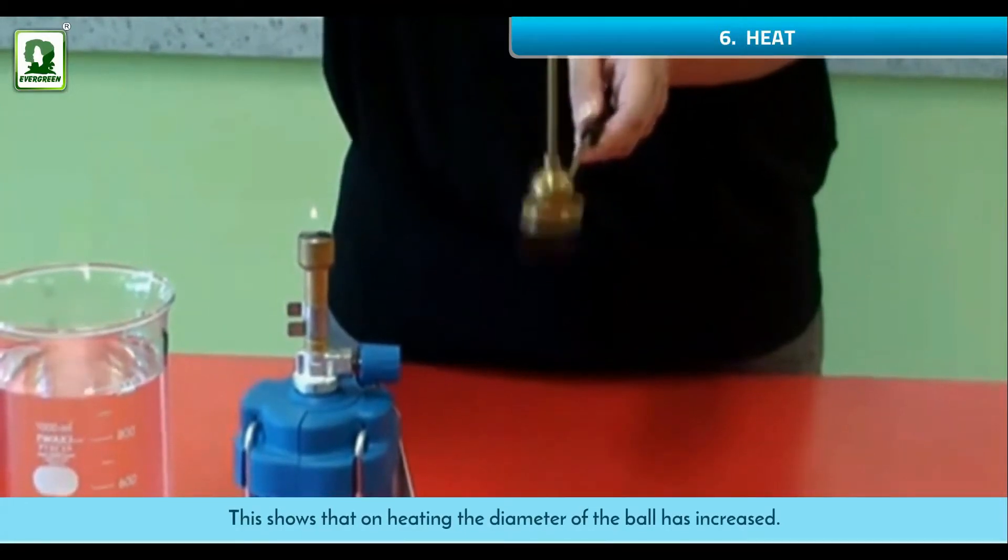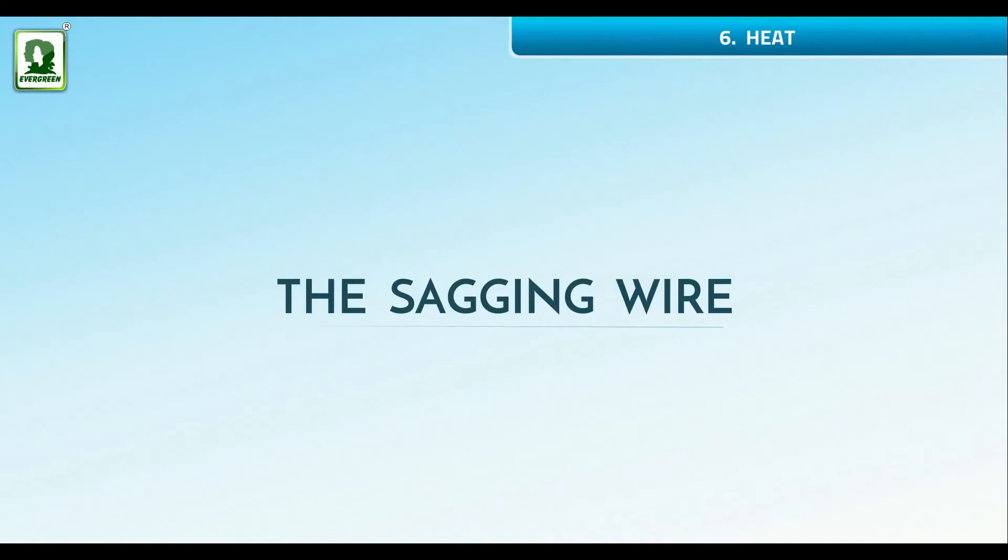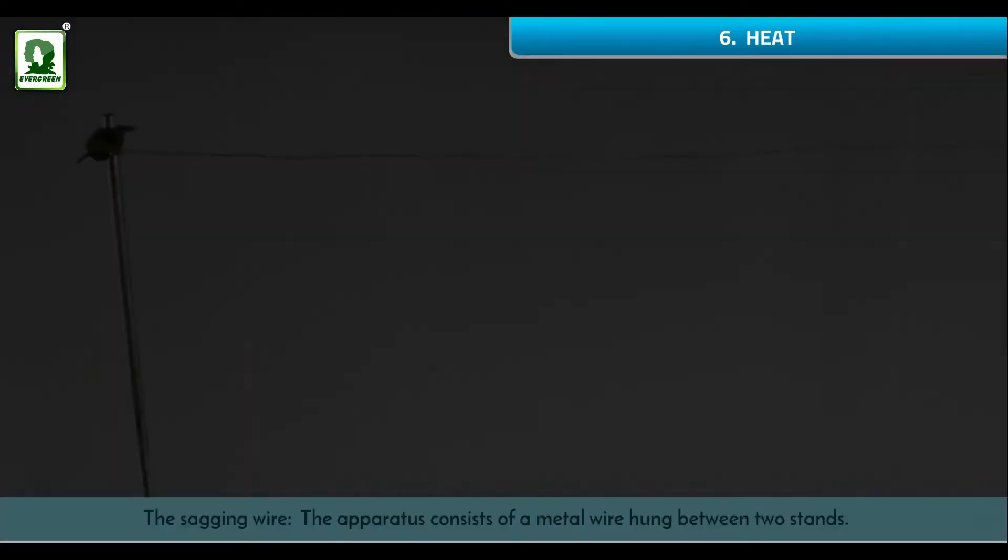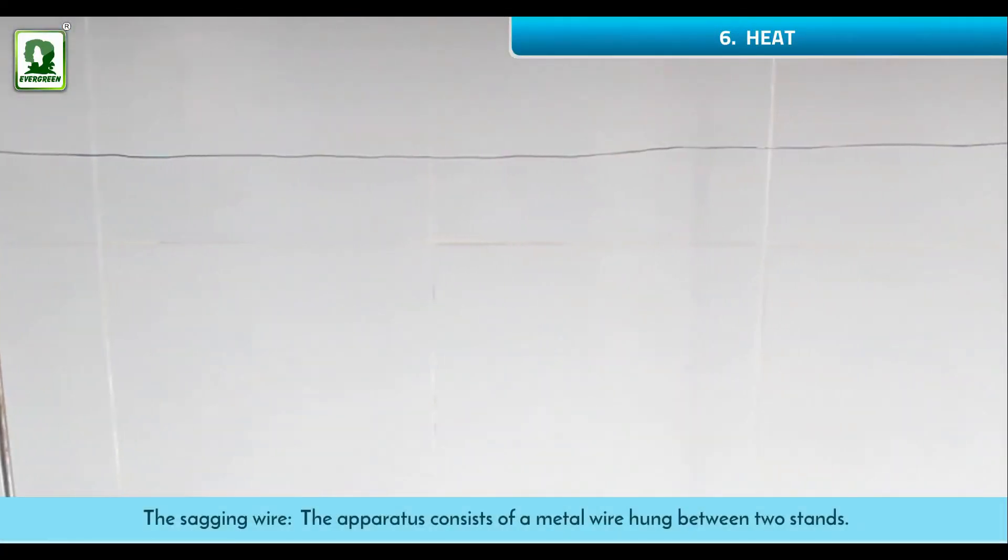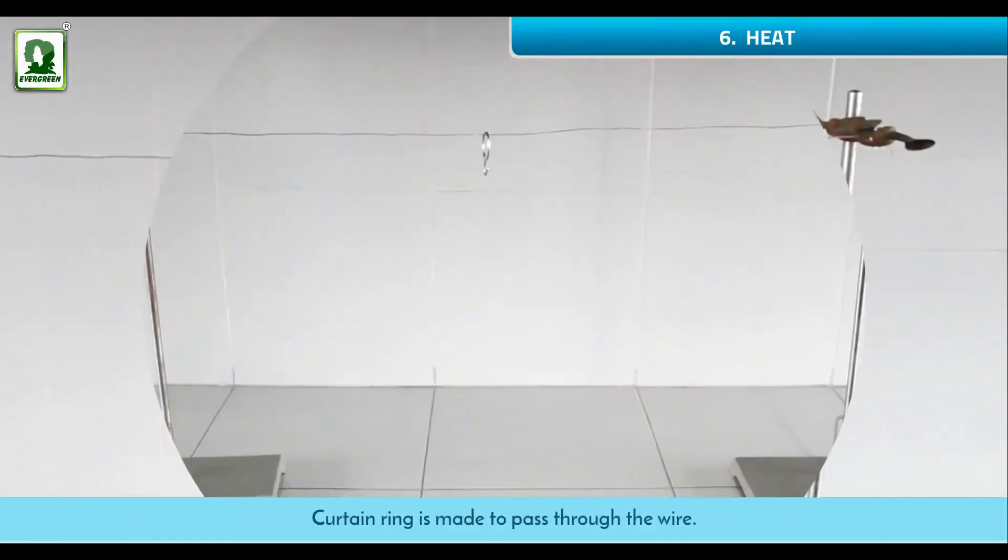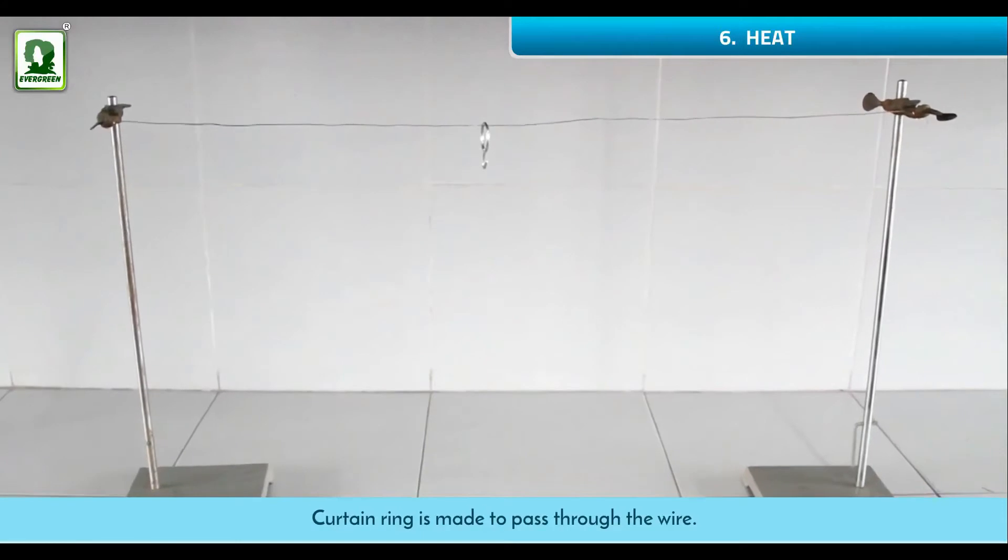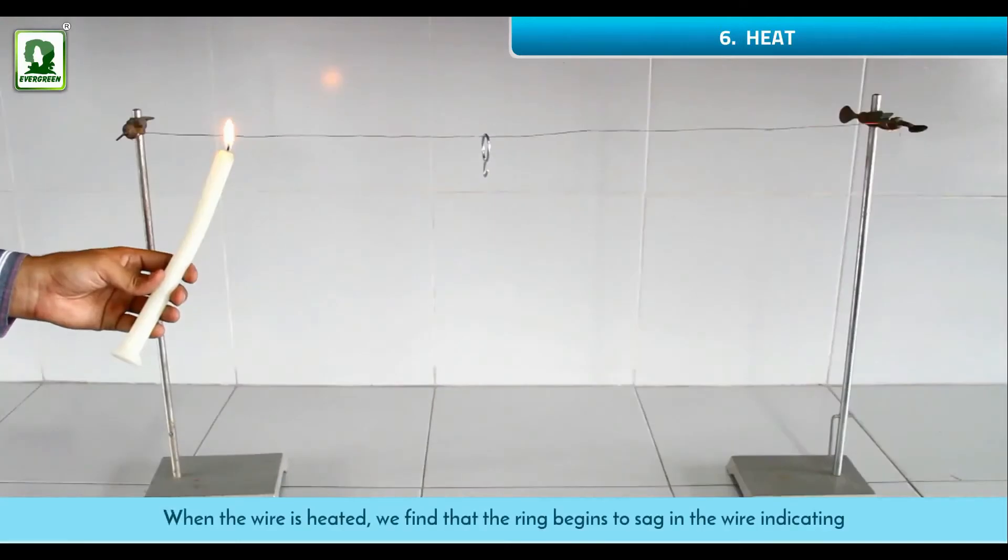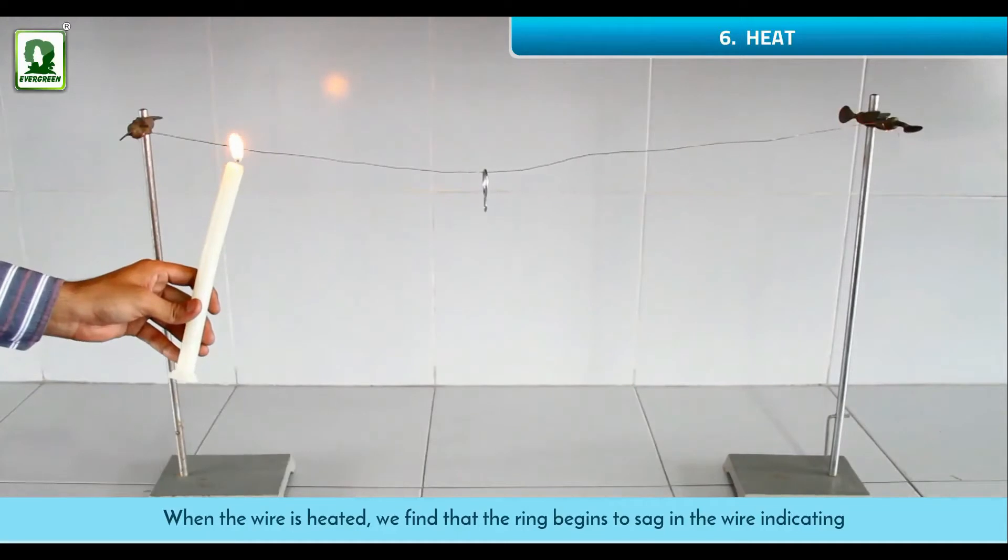The sagging wire: The apparatus consists of a metal wire hung between two stands. A curtain ring is made to pass through the wire. When the wire is heated, we find that the ring begins to sag in the wire, indicating the increase in the length of the wire.